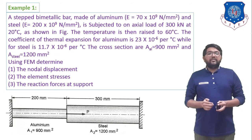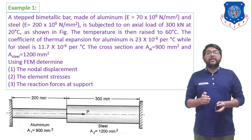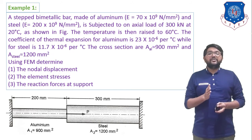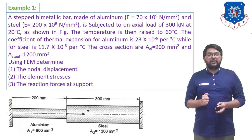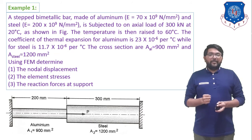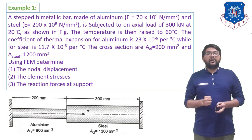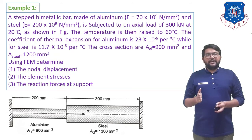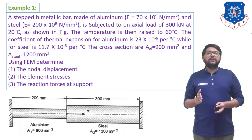The coefficient of thermal expansion for aluminium, alpha₁, is 23×10⁻⁶ per °C. For steel, alpha₂ is 11.7×10⁻⁶ per °C. The cross-sectional area of aluminium is 900 mm² and the cross-sectional area of steel is 1200 mm².